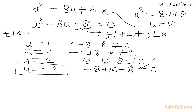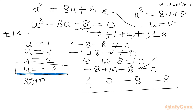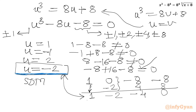Since u = -2 is a root, we use the synthetic division method. Writing the coefficients of the cubic: 1, 0, -8, -8. The leading coefficient stays as 1. Multiplying -2 × 1 = -2; adding: 0 + (-2) = -2. Then -2 × (-2) = 4; adding: -8 + 4 = -4. Then -2 × (-4) = 8; adding: -8 + 8 = 0. The resulting quadratic has coefficients giving u² - 2u - 4.